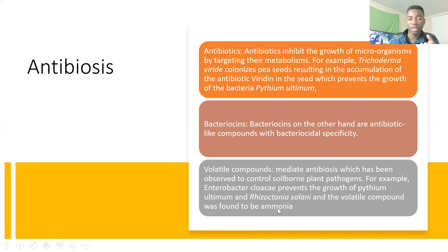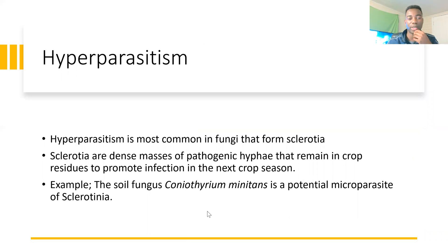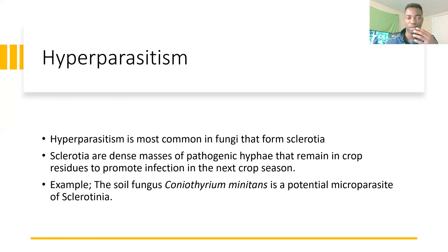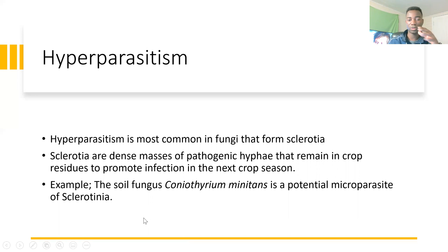Moving on to hyperparasitism, which is most commonly found in fungi that form sclerotia. Sclerotia is basically a dense mass of pathogenic hyphae found in the rhizosphere — the root system of the plant — that remains in the crop even after they die, causing infections of future crops and continuing the cycle by transmitting infection from one plant to another across generations. An example is the soil fungus Coniothyrium minitans as a potential micro-parasite of Sclerotinia.